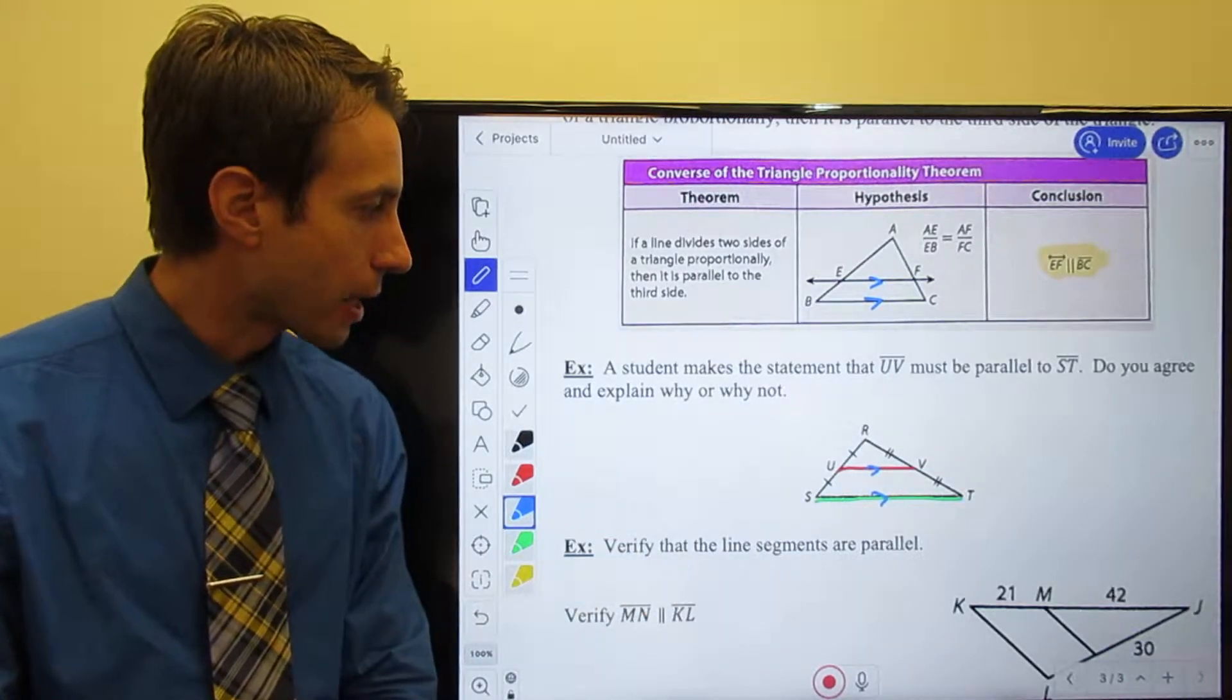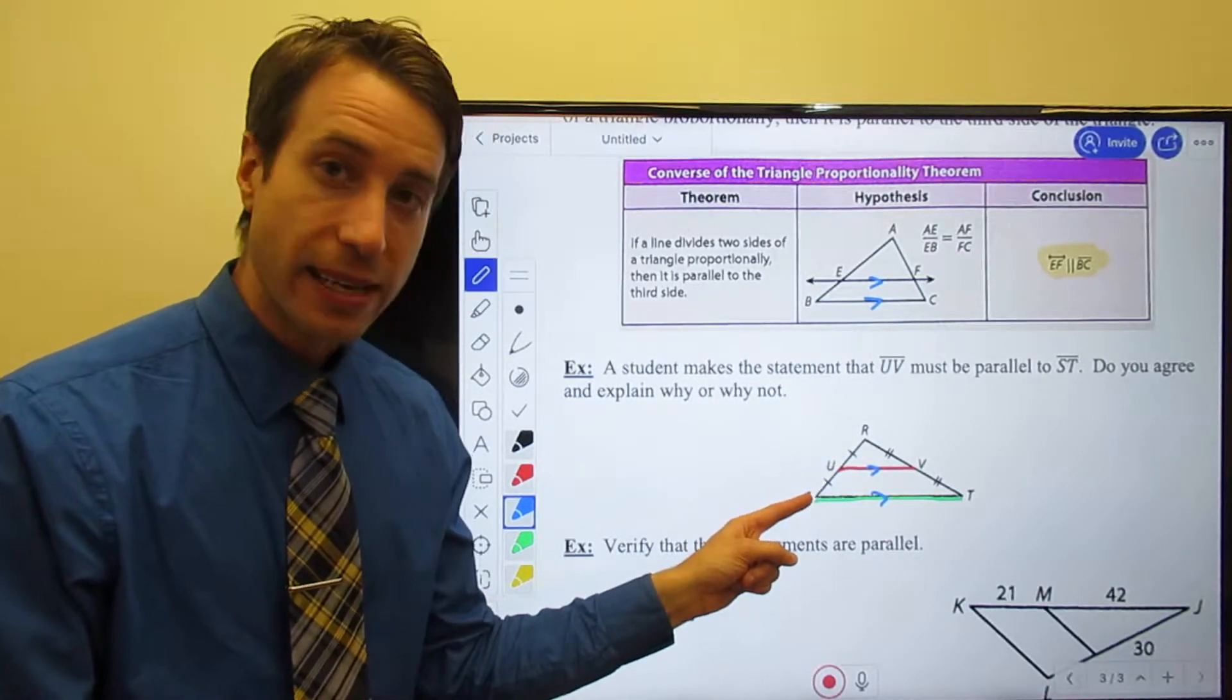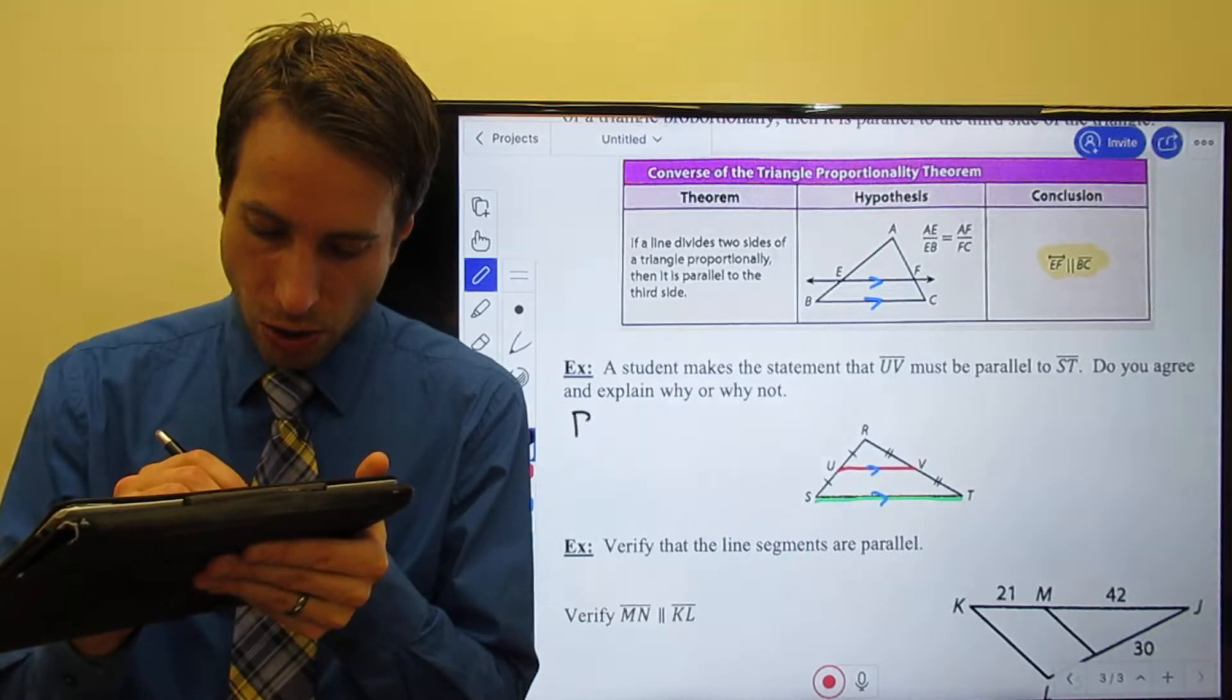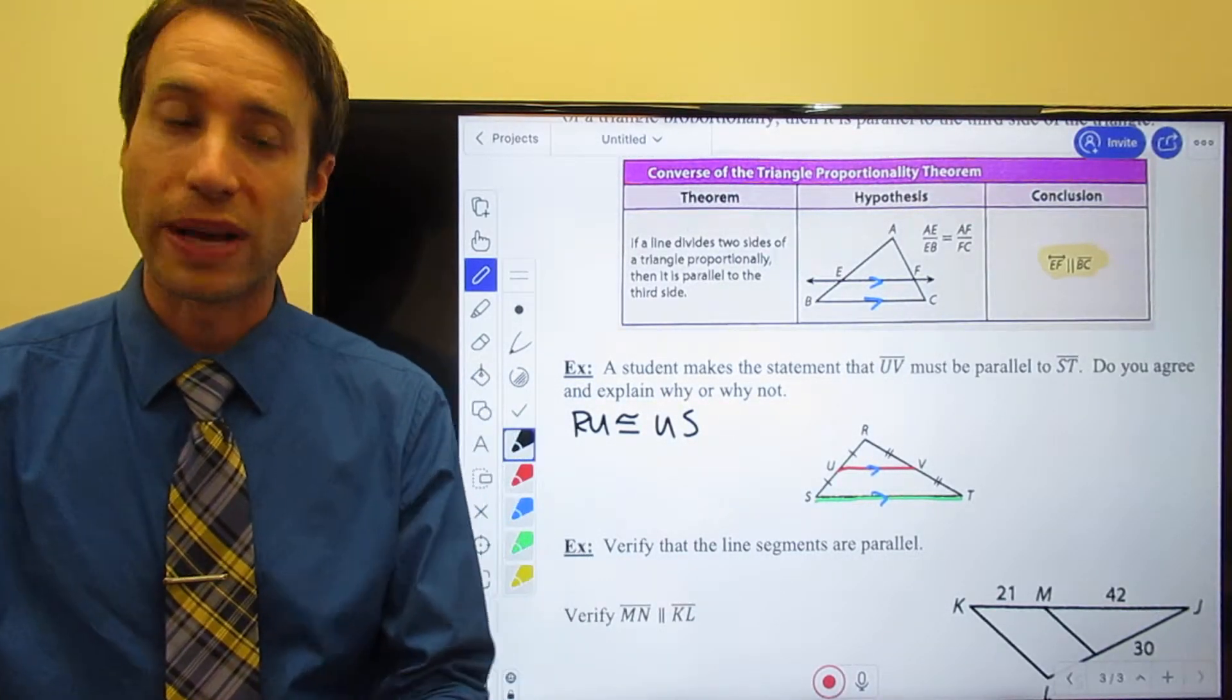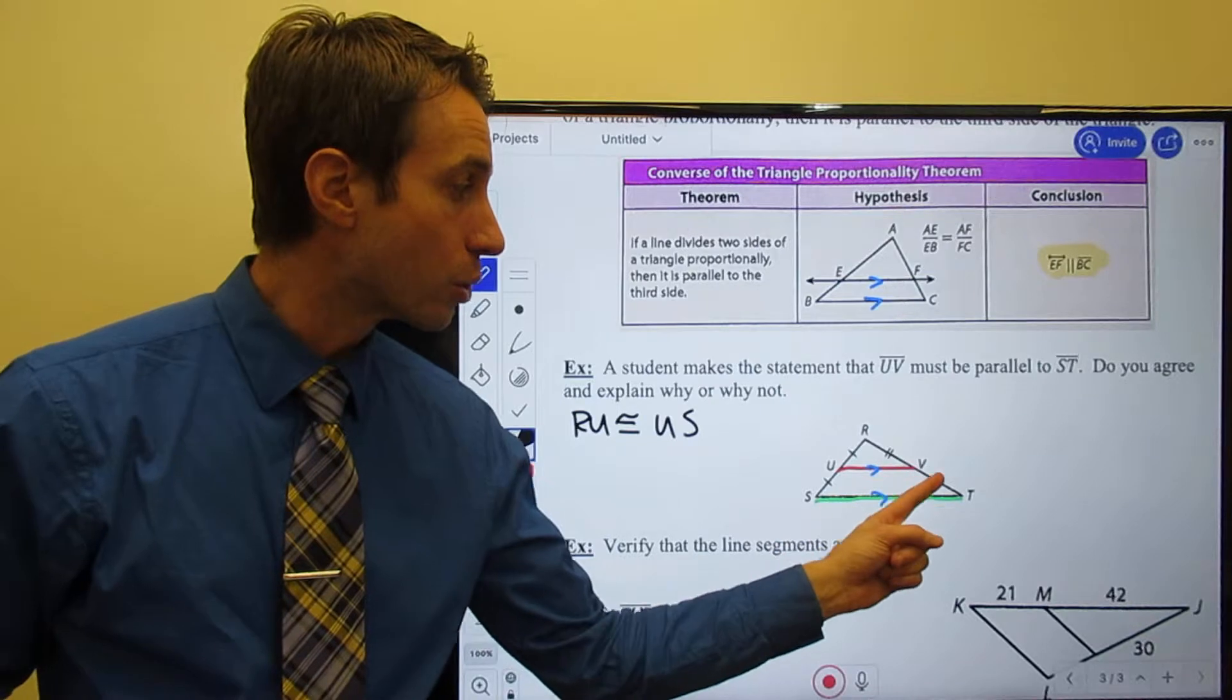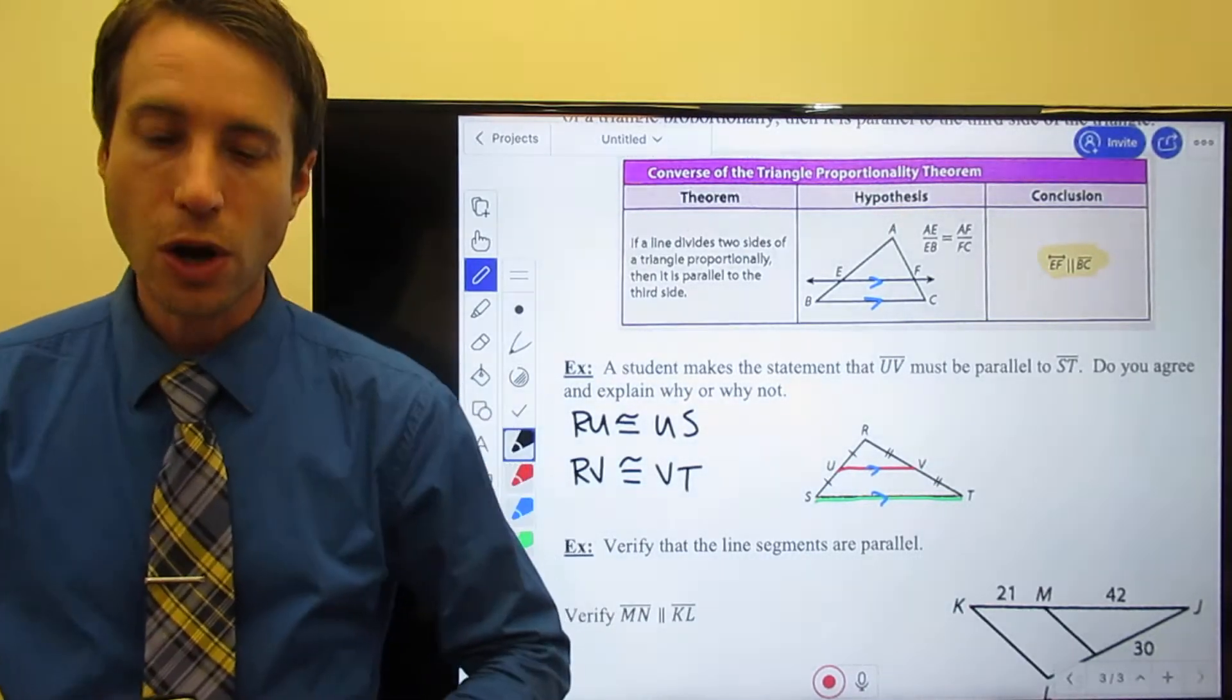Well, I take a look at the diagram here and here's what I notice. Please notice that RU and US are congruent. They're the same. How do I know? Because I've got those little congruent symbols in there. So I know that RU is congruent to US. Well, please notice the exact same thing is on the other side. Thanks to the congruent symbols, I know that RV is congruent to VT.